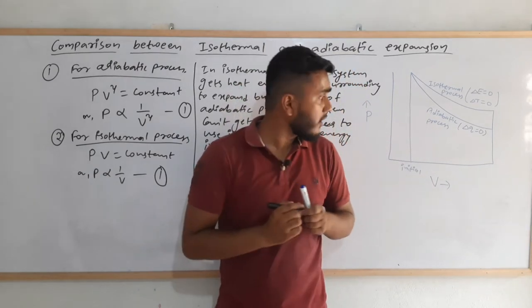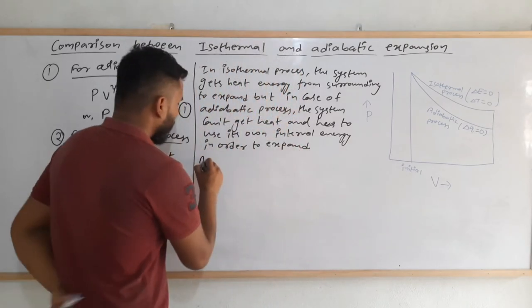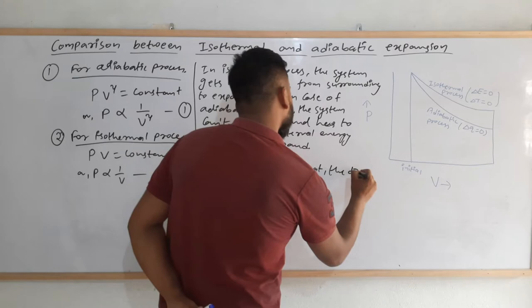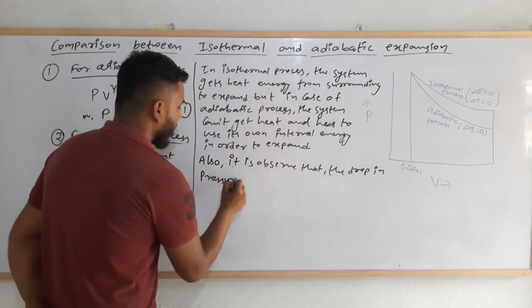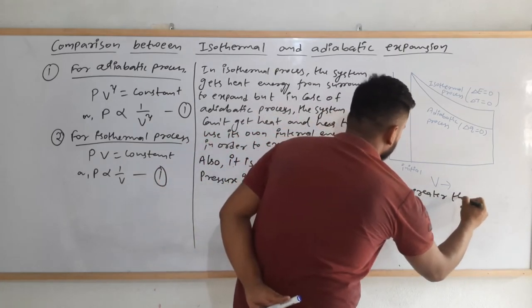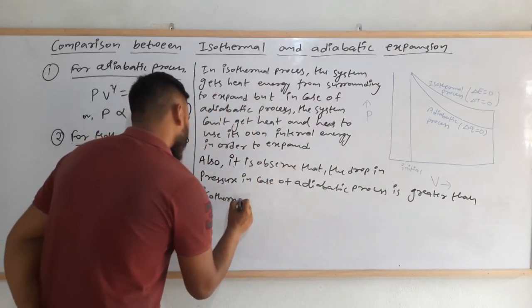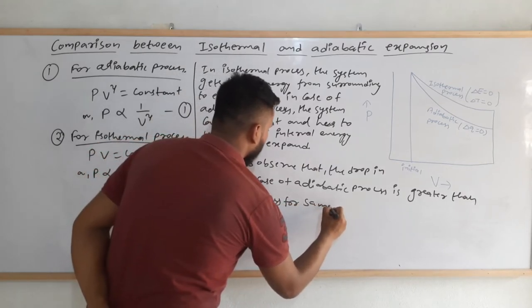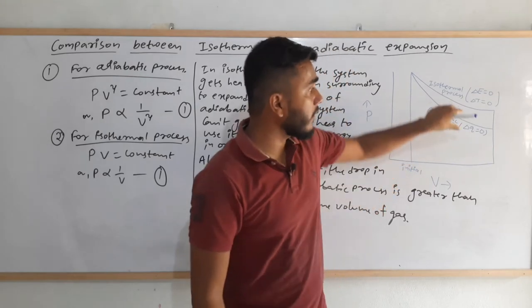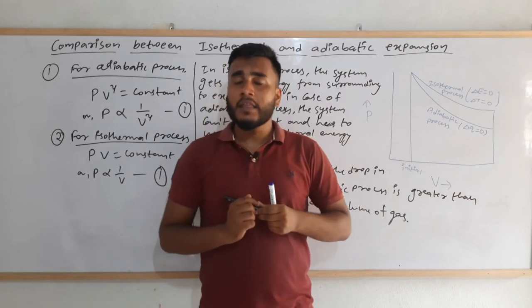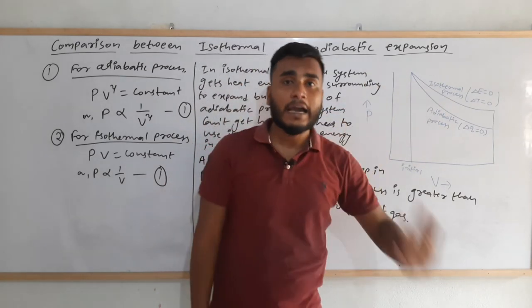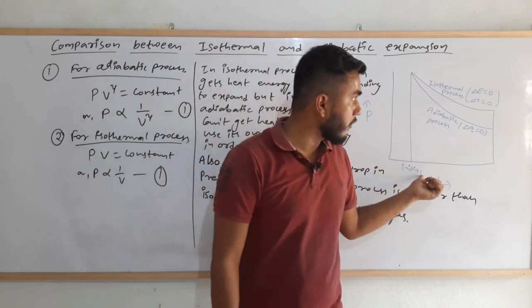This is why the adiabatic curve is steeper than the isothermal curve. It is also observed that the drop in pressure in the case of the adiabatic process is greater than in the isothermal process. From the graph, for the same volume of gas, the drop in pressure is greater in the adiabatic process than in the isothermal process.